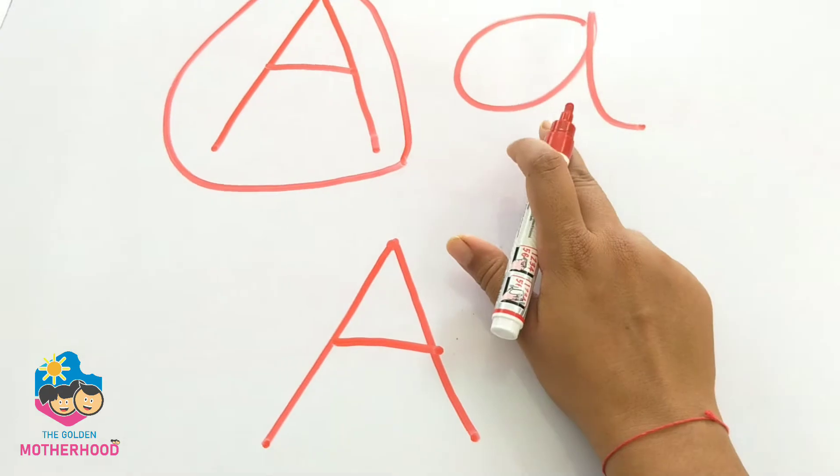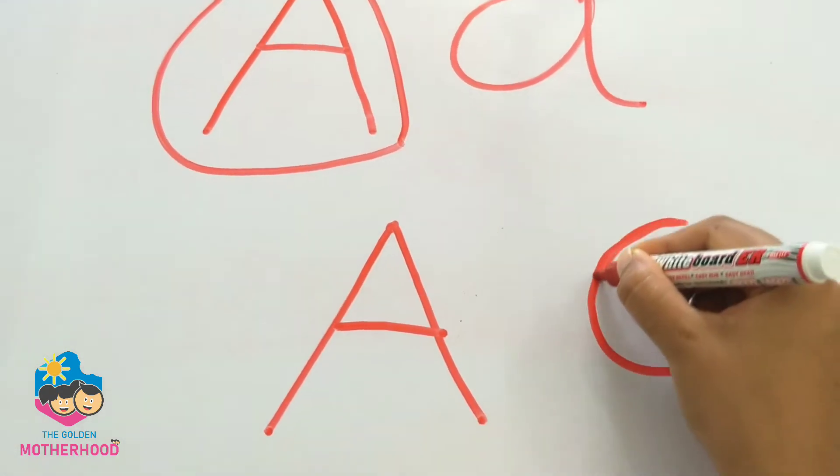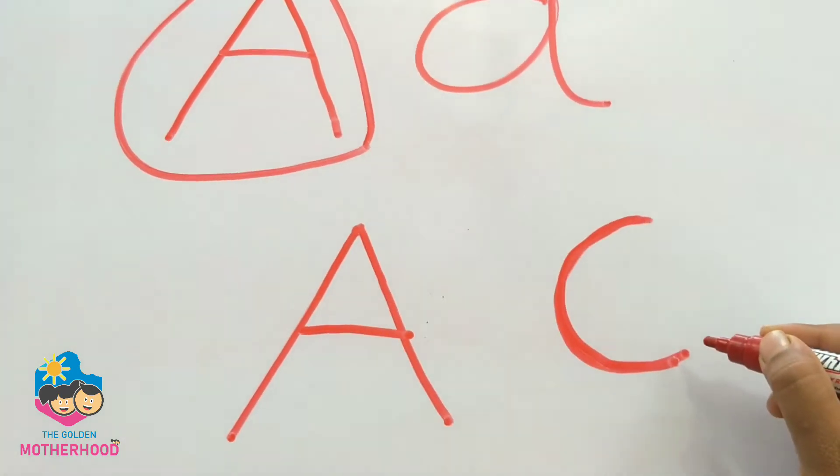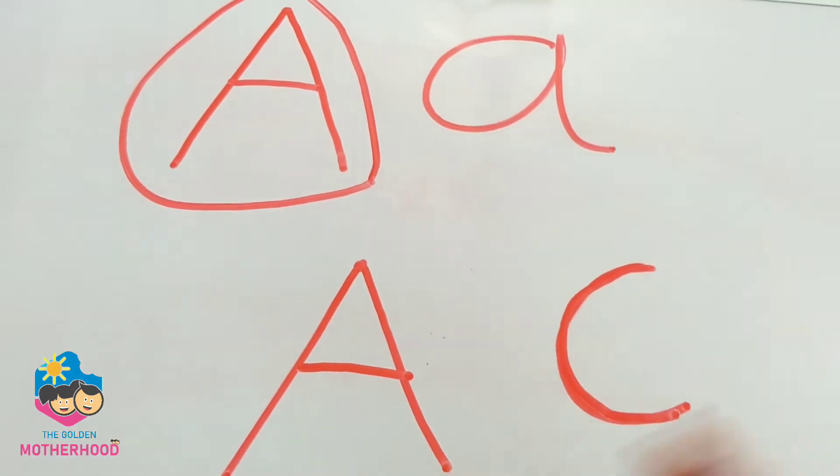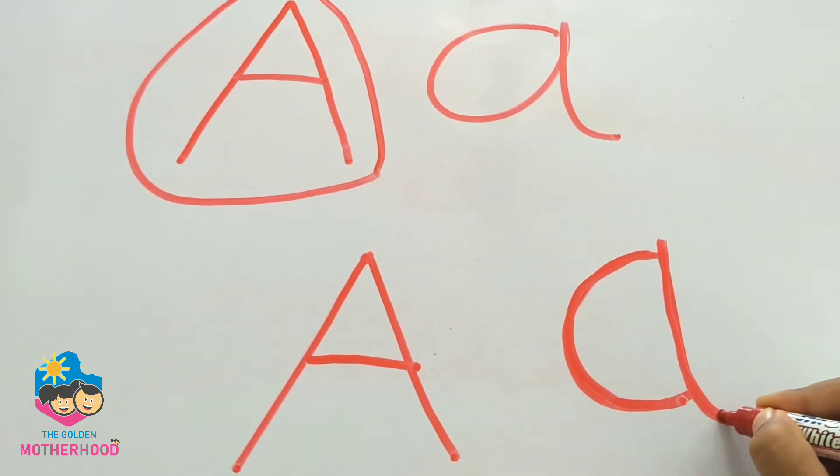Small A, one forward curve, one forward curve, looking like C or a left ear and one standing line, one standing line.